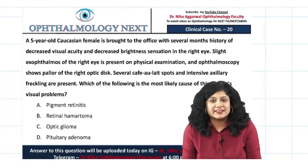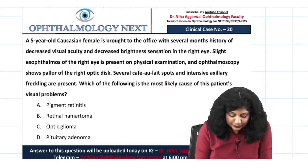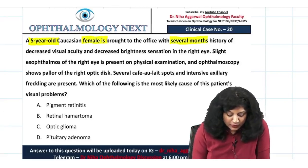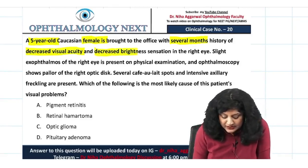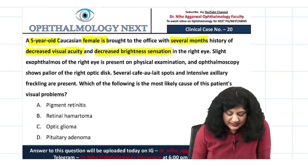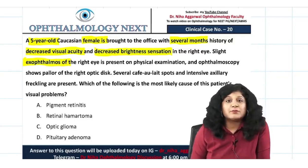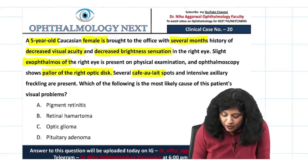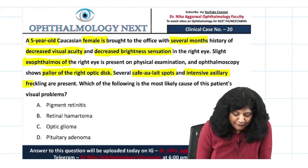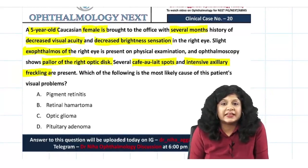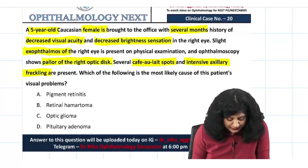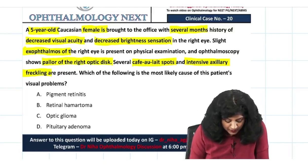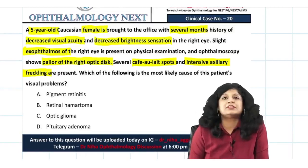Welcome to yet another session of clinical scenarios. This is case number 20. We have a five-year-old Caucasian female brought to the office with several months history of decreased visual acuity and decreased brightness sensation in the right eye. There is slight exophthalmos of the same eye, and ophthalmoscopy shows pallor of the right optic disc. She also has several café-au-lait spots with intensive axillary freckling. Which of the following is the most likely cause of this patient's visual problems? Options: A) Retinitis pigmentosa, B) Retinal hamartomas, C) Optic glioma, D) Pituitary adenoma.